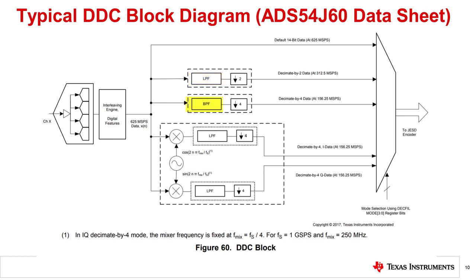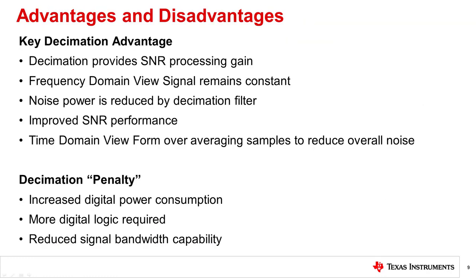This part has options for a low-pass filter or high-pass filter in decimate-by-2 mode. In decimate-by-4 mode, it offers four different center frequency options for the bandpass filter. Using decimation has advantages as well as some disadvantages. The advantages are it will provide SNR processing gain, the frequency domain view of the signal remains constant, the noise power is reduced by the decimation filter, SNR performance improves, and due to averaging samples, the overall noise of the converter is reduced. Some of the disadvantages are more digital logic is required, which will cost more power, and the overall signal bandwidth capability will be reduced.